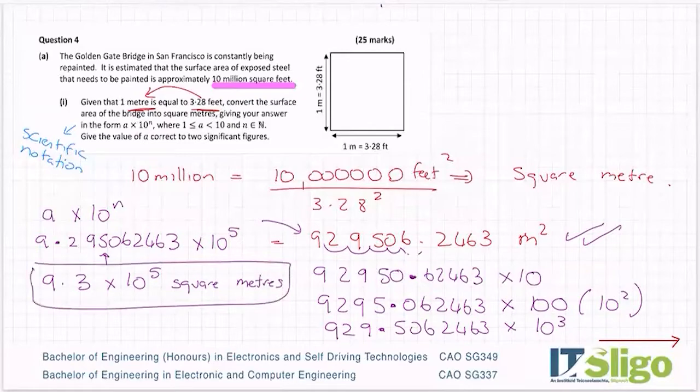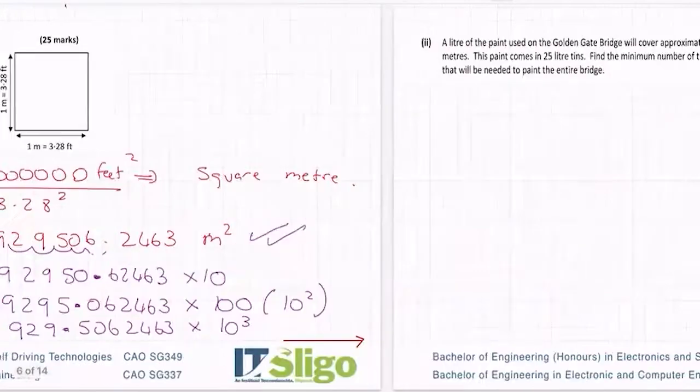9.3 by 10 to the 5 square meters is your answer. So quite a lot in that question. You have a conversion factor squared. You have scientific notation. And you have rounding to significant figures. So let me know if any of those parts of questions needs more practice. And we can, of course, pull out more questions and practice them. So that's part A.